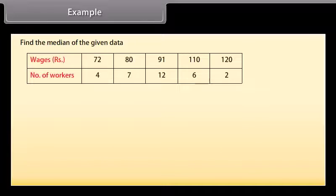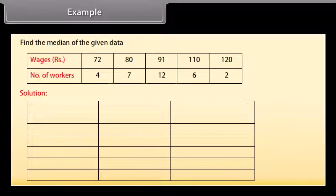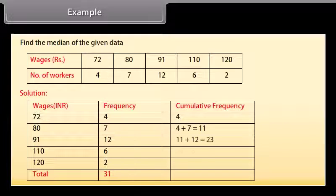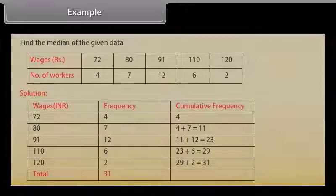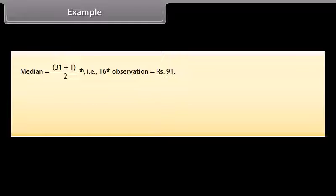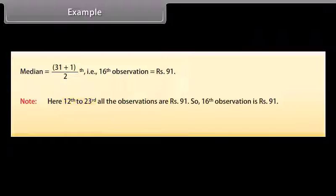Find the median of the given data. Solution: Write the given wages and frequency; the sum of frequencies is 31. Find the cumulative frequency for each wage by adding the previous frequency to the current frequency. Find the median, which is the (31 plus 1) divided by 2th, that is the 16th observation, which equals Rs. 91. Here, the 12th to 23rd observations are all Rs. 91, so the 16th observation is Rs. 91.